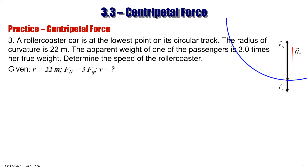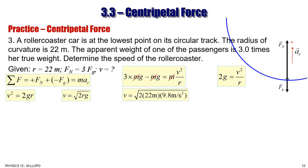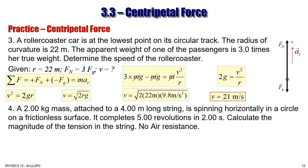We solve the problem using dynamics: the sum of all forces equals mac. Normal force is positive and force of gravity is negative: FN − Fg = mac = mv²/r. Since FN = 3mg, we get 3mg − mg = mv²/r. The masses cancel, giving 2g = v²/r. Solving, v² = 2gr, so v = √(2rg) = √(2 × 22 × 9.8) = 21 m/s.